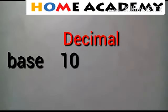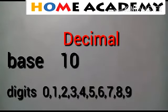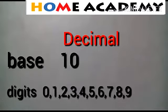Decimal — the base is equal to 10, and the numbers used are from 0 to 9. So the digits are 0, 1, 2, 3, 4, 5, 6, 7, 8, and 9. In decimal, the base is 10 and the numbers used are from 0 to 9. If you count from 0 to 9, then it becomes 10 digits.